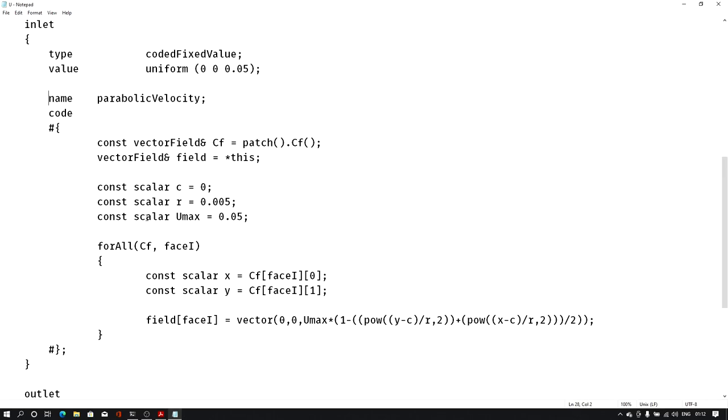Then again the same code I have explained earlier - we have center of the face defined, then field defined, then center of the geometry, radius of the geometry, and maximum velocity. Now you just need to change these three parameters and it will give parabolic velocity profile for your patch. That's all for defining the boundary condition. Now let me close it and I'll show you the live demo.